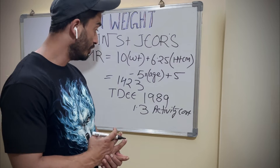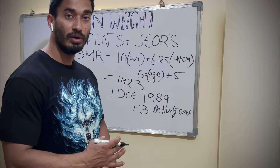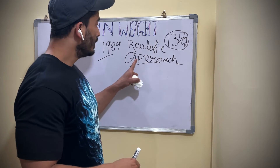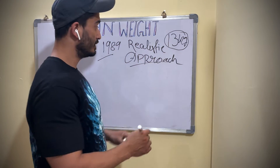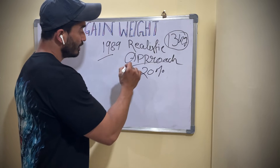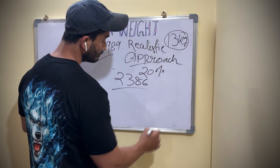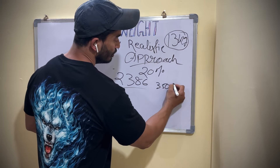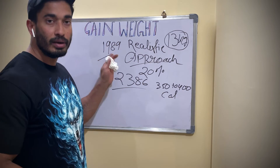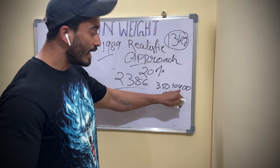So we found the TDEE value of 1989. Now the question is how much extra calorie we are going to add to achieve his 13 kg goal. We are applying the realistic approach, which is a 20 percent surplus — giving us approximately 2386 calories. We are adding 350 to 400 calories above his normal calorie consumption after TDEE to achieve this goal.